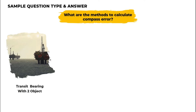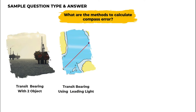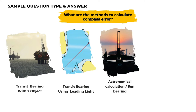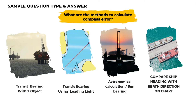What are the methods to calculate compass error? We can use transit bearing with two objects to find the compass error. Compass error can also be obtained by using transit bearing with a leading light when transiting through a channel, by astronomical calculation or sun bearing, and also by comparative heading with the berth direction on the chart.